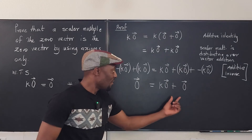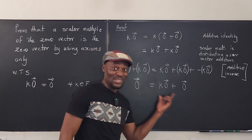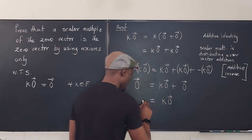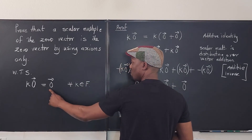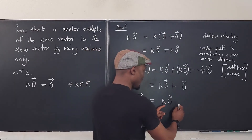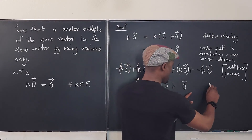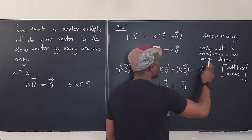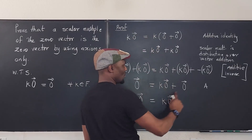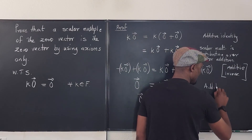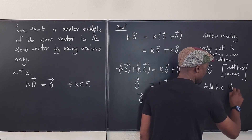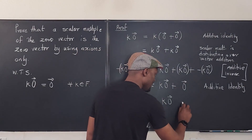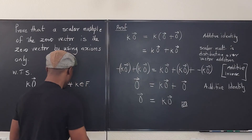We know that whenever you add the zero vector to any vector it does not change the vector, so the zero vector plus k·0⃗ equals k·0⃗. That looks like what we started with — that's what we wanted to prove! The justification is the additive identity axiom, just like at the beginning: adding the zero vector to k·0⃗ did not change it. And that's it — you have proven what you're supposed to prove.